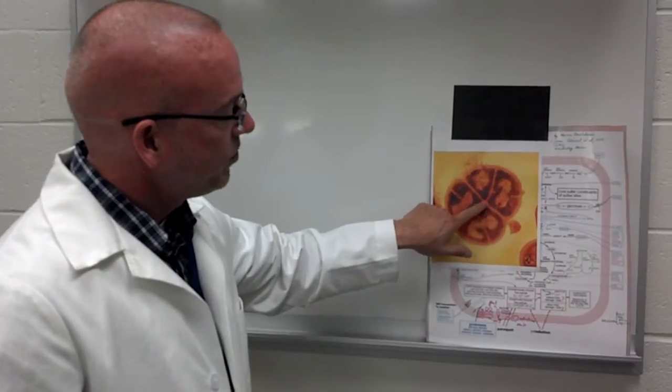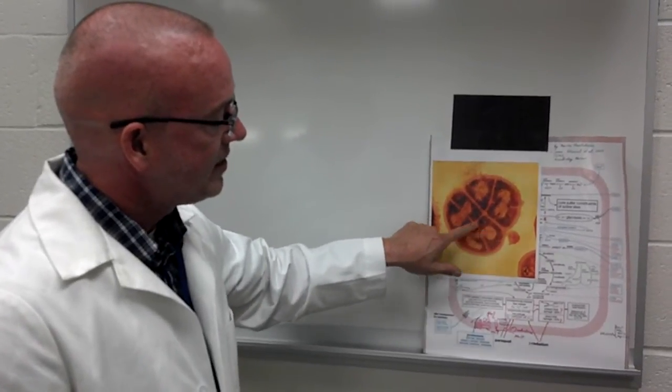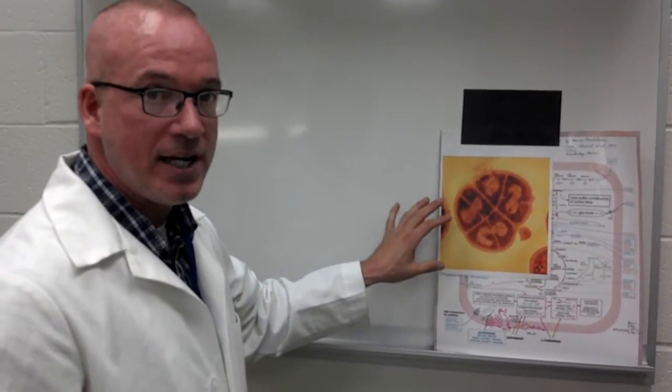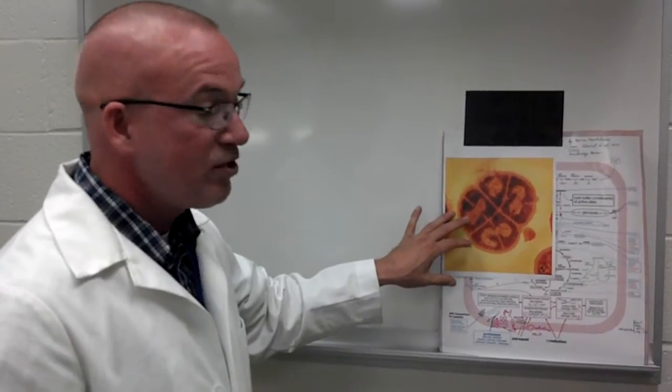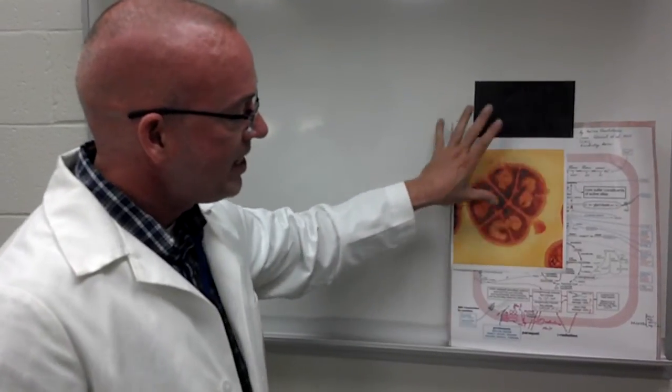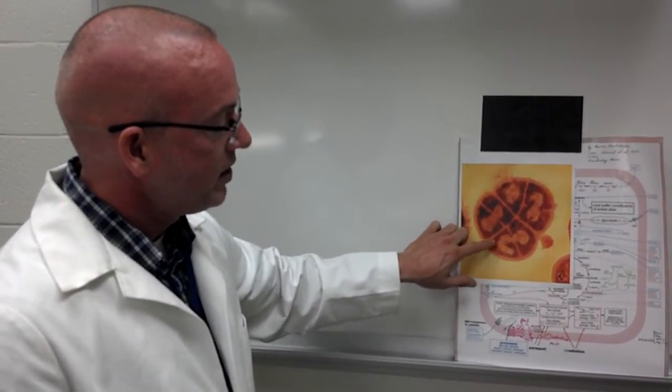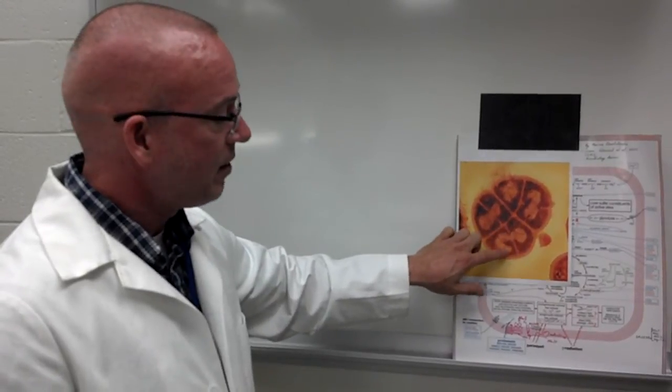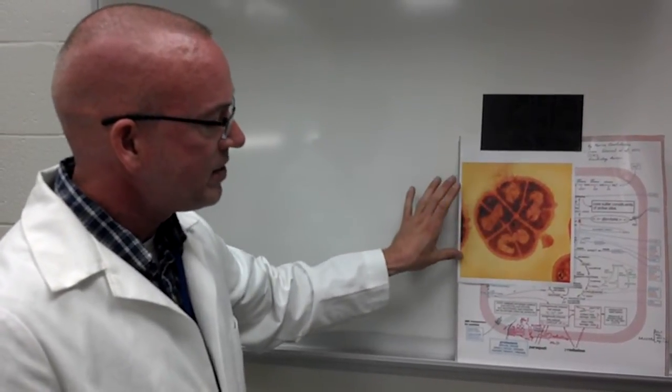And mixed in with all these proteins in Deinococcus are manganese complexes. Those are free radical eating chemical machines that protect all the proteins. So after radiation, all these proteins in here are still working because of the manganese complexes, which means that the cell can repair itself.